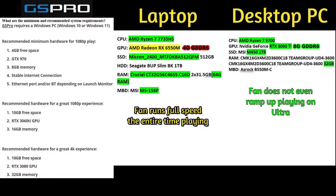I'm going to put a graphic up on the screen. On the left is GS Pro's information from their website. They require Windows 10 or Windows 11, and their recommended minimum hardware for 1080p play is 4 gig of free space, a GTX 970 GPU, and 8 gig of RAM. You'll also need a stable internet connection because GS Pro checks for your license and downloads new software versions on startup, and you'll need either an Ethernet port or Bluetooth depending on your launch monitor.